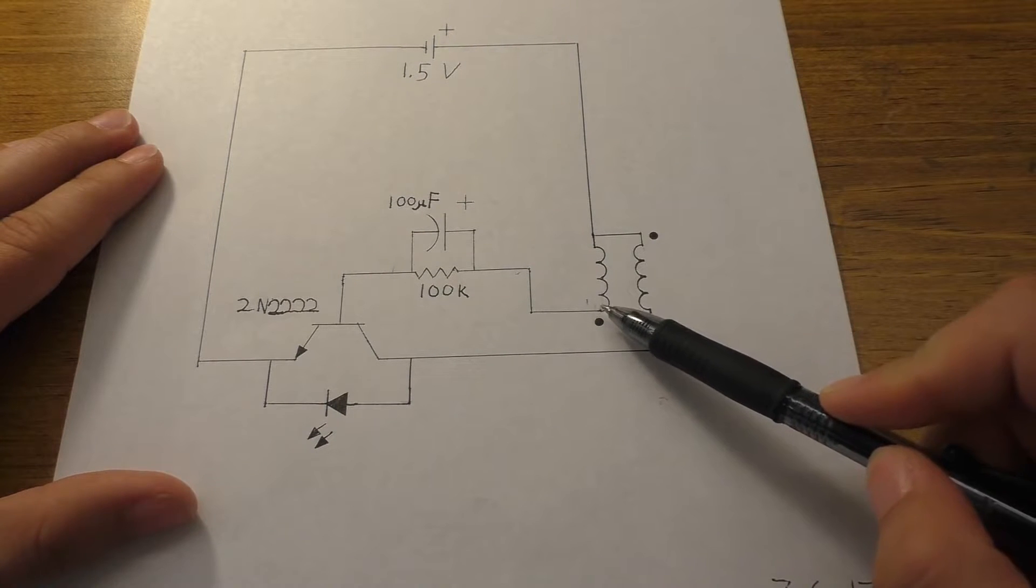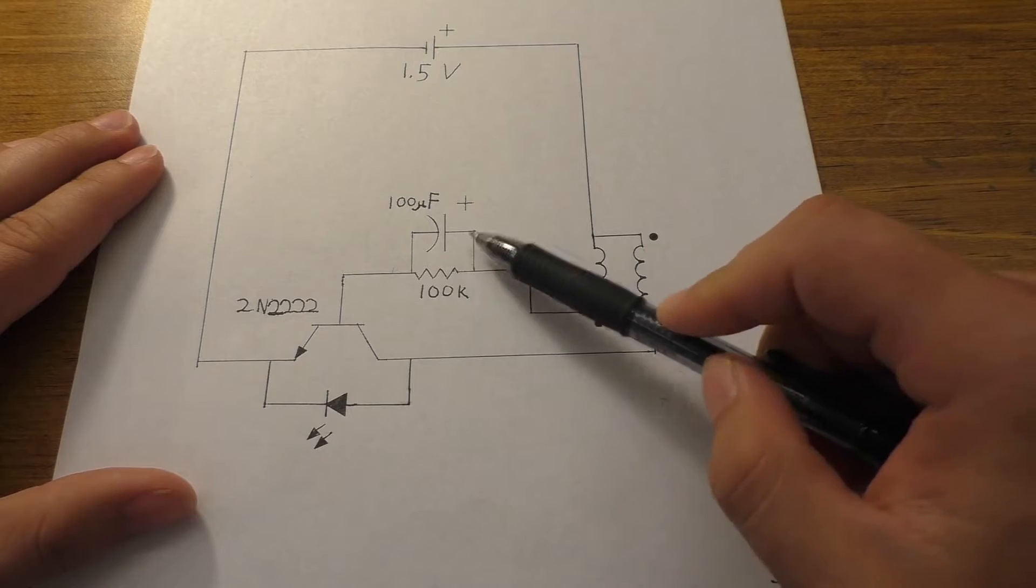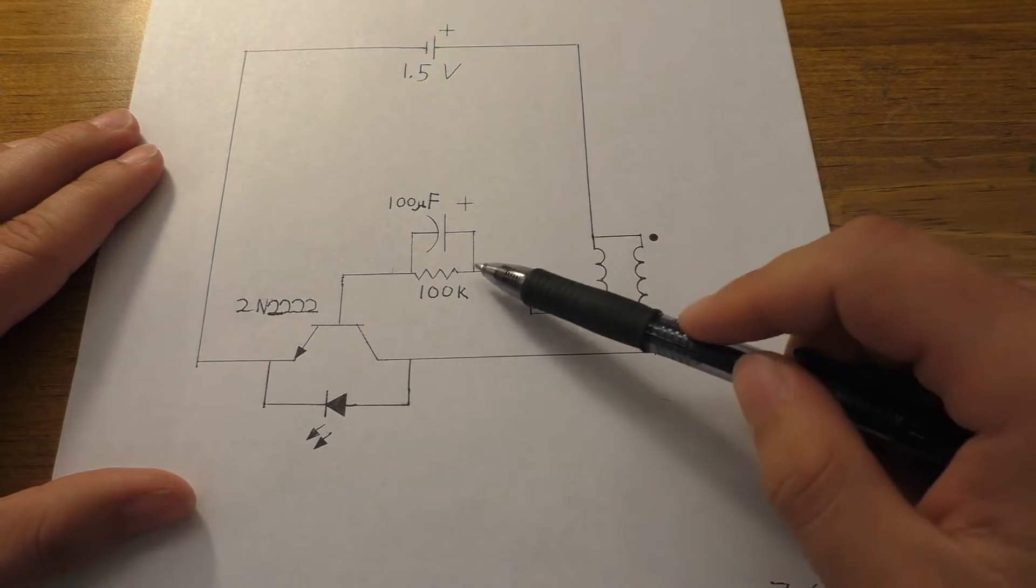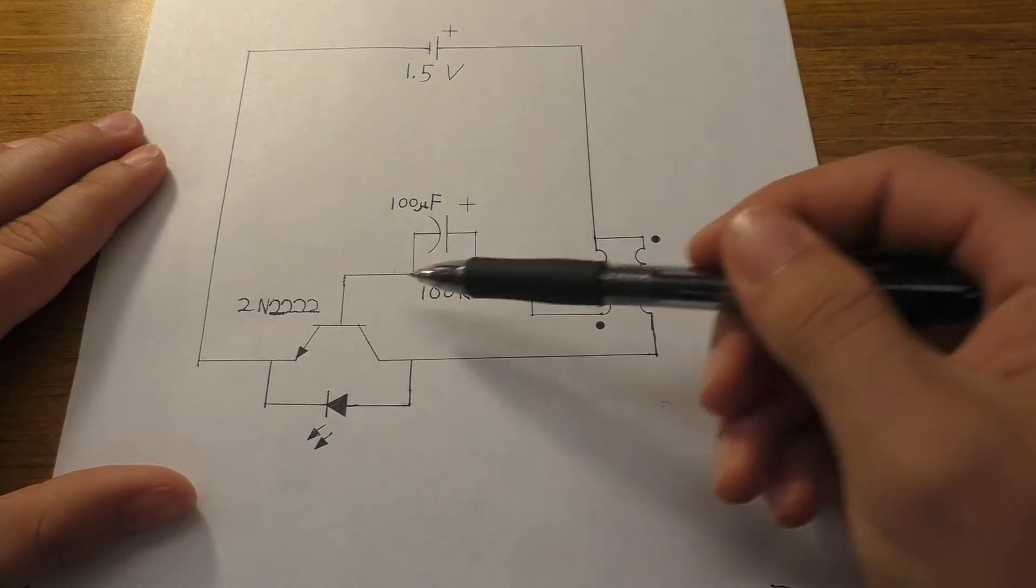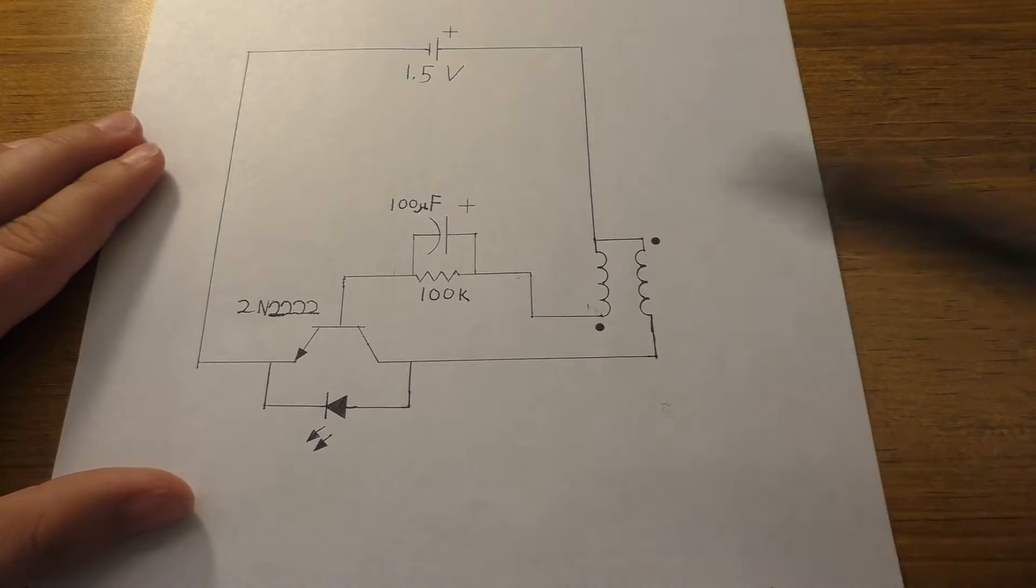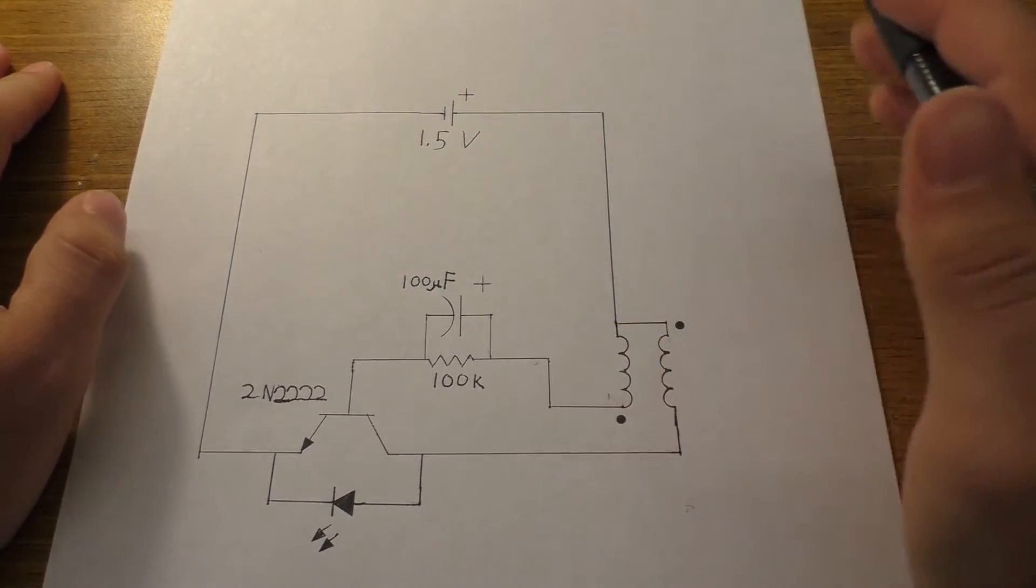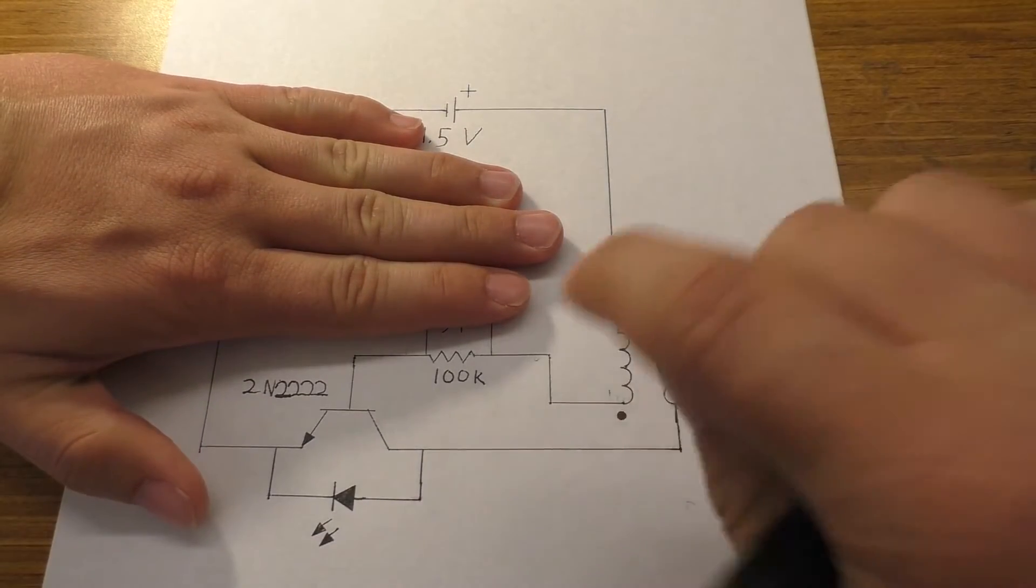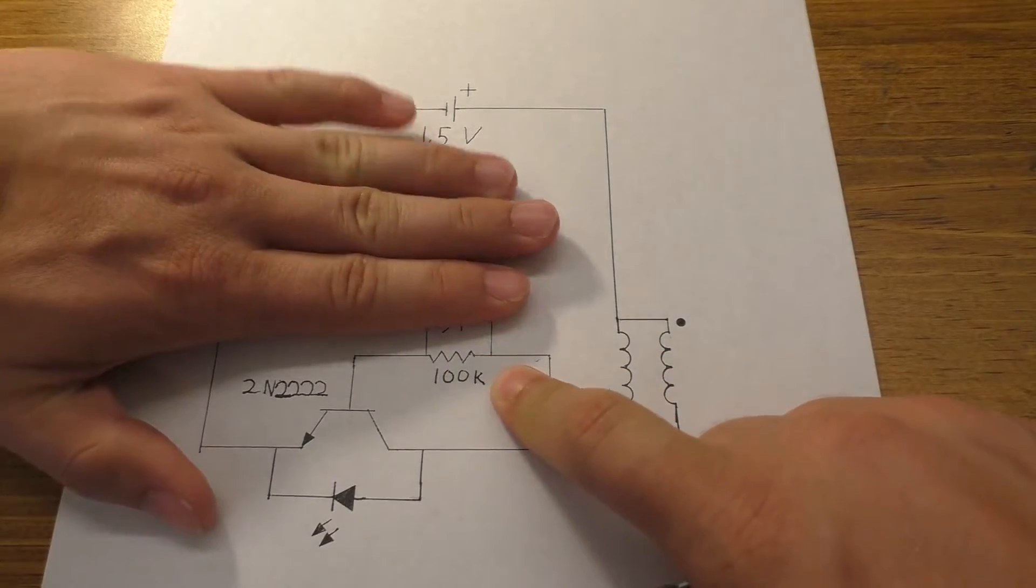Then off the other coil that goes through a 100k resistor and that 100k resistor has a 100 microfarad capacitor across it or in parallel with it. And then that's going into the base of the transistor. So fairly simple circuit. It is just a standard jewel thief, except for you wouldn't have the capacitor in a standard jewel thief. And this would be a 1k resistor-ish instead of 100k.